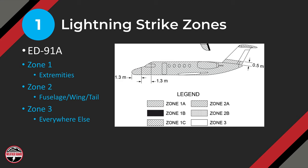Step one is lightning strike zones. ED-91A is going to contain that information, and it discusses each of the different lightning zones that apply to particular parts of the aircraft and different types of aircraft. It explains lightning zones for rotorcraft, helicopters, jet aircraft where engines are mounted on the fuselage or on the wing. Different sizes of aircraft and configurations are included, as well as turboprops.